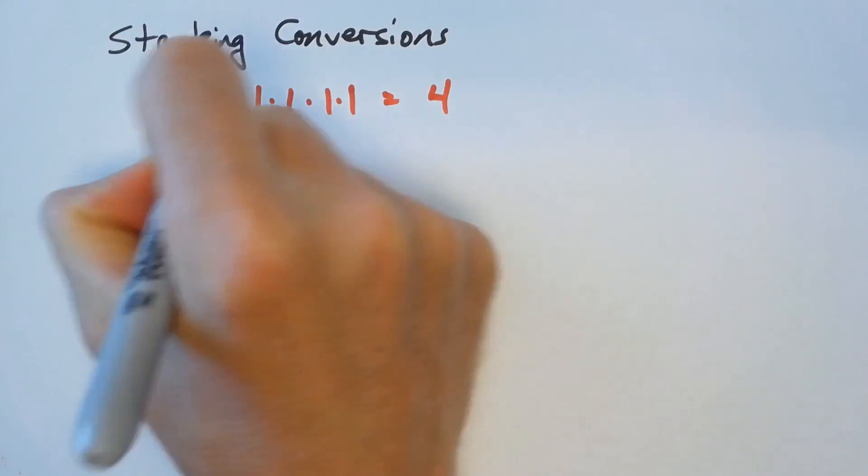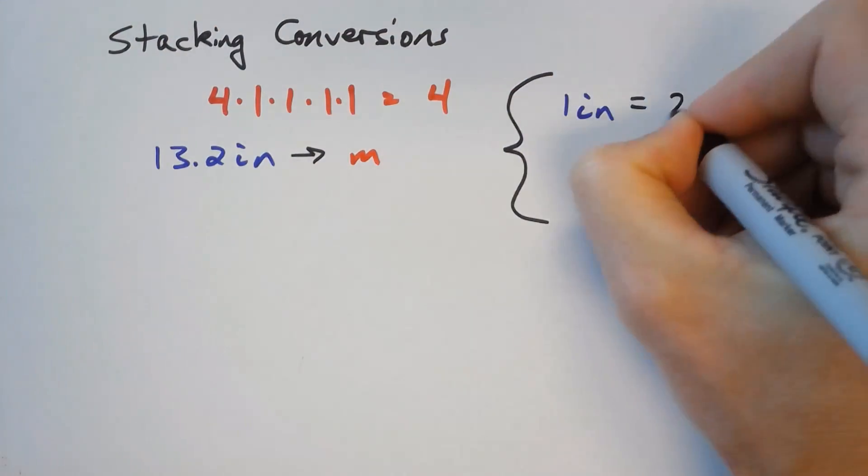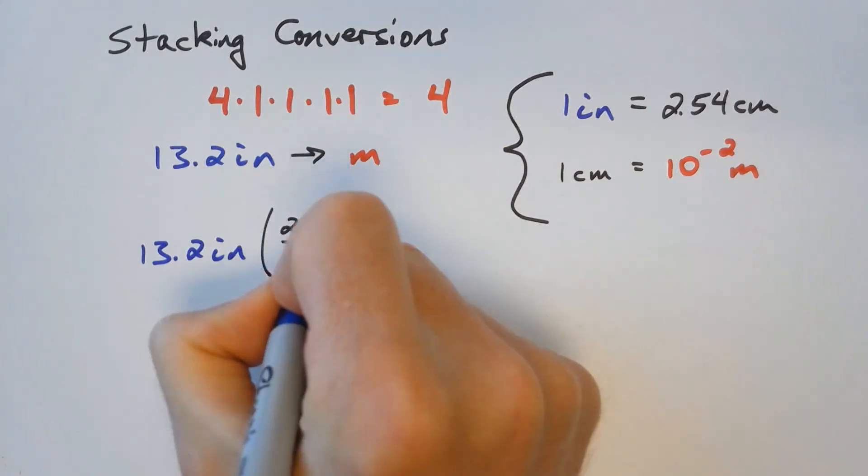If we want to convert 13.2 inches to meters, there are two conversion factors that we need to use. We can use the first to convert to centimeters and the second to convert to meters.